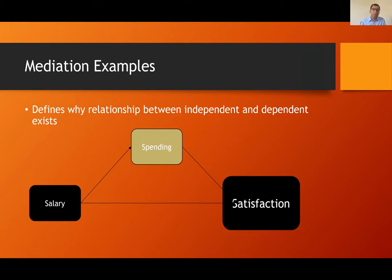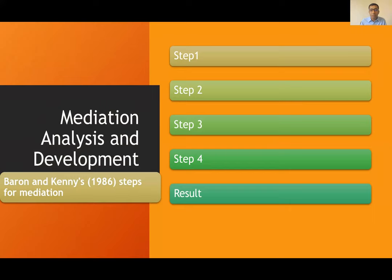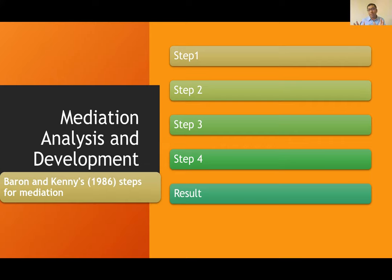Let's talk about the basic statistical procedures we can use to analyze mediation and which one is best, because this is a very important and debatable process. We were using this four-step model at first while using SPSS, when structural equation modeling was not yet famous. So mostly we were using regression analysis to run all these causal effects, and in that case we were using the Baron and Kenny method.